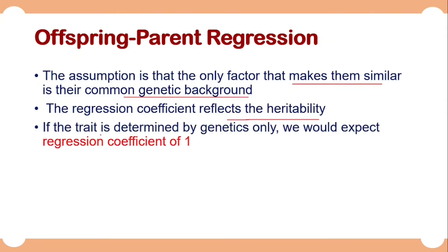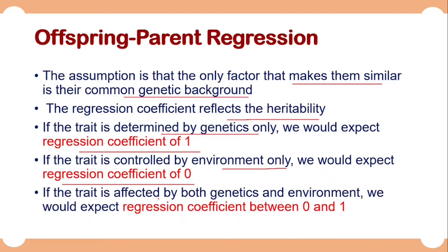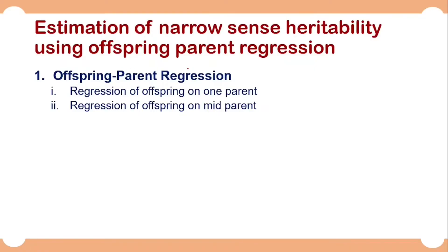If a trait is determined by genetics only, we would expect a regression coefficient of 1. If the trait is controlled by environment only, we would expect a regression coefficient of 0. But if the trait is affected by both genetics and environment, the regression coefficient would be between 0 and 1 — greater than 0 because genetics plays a role, and less than 1 because environment also has an effect.